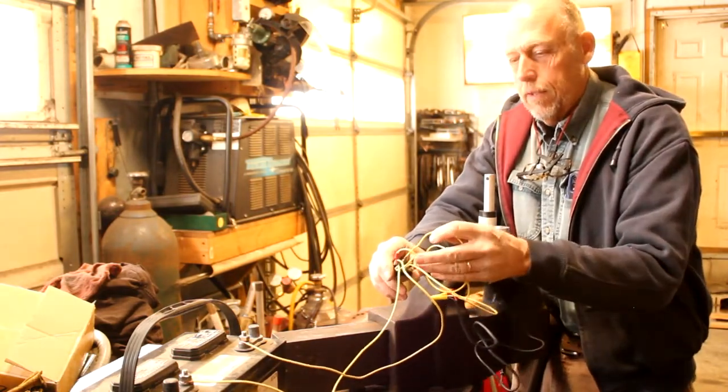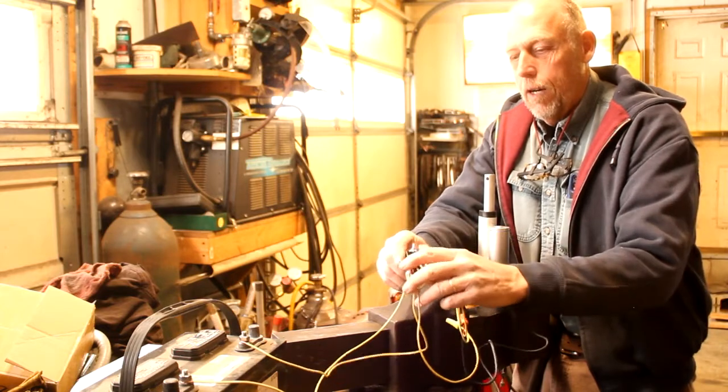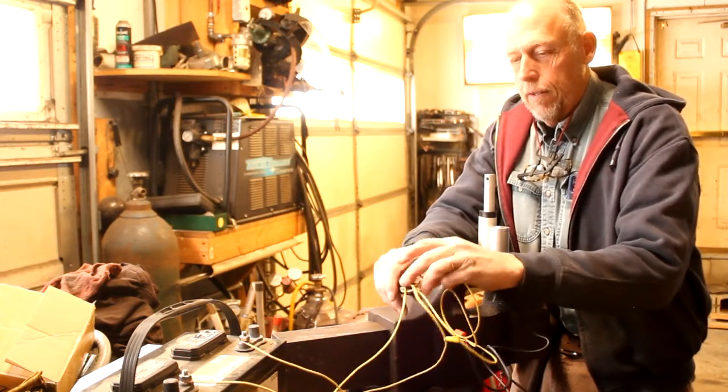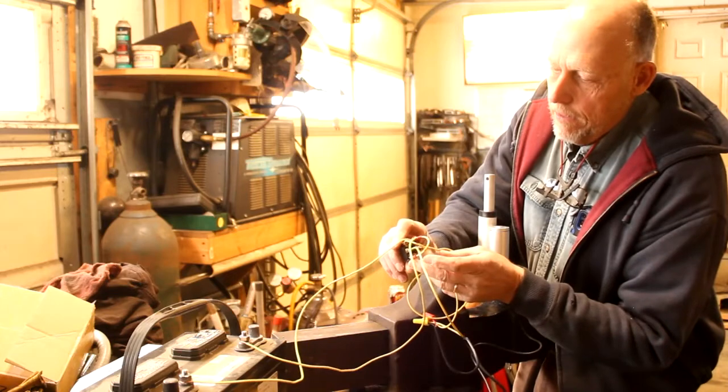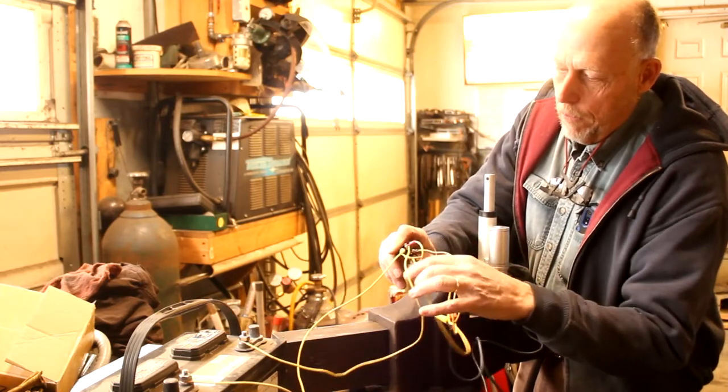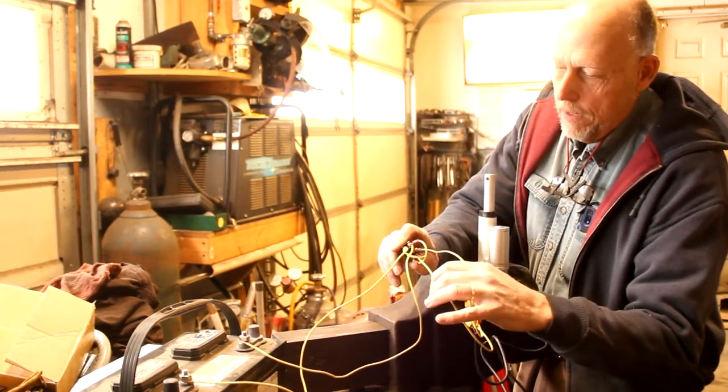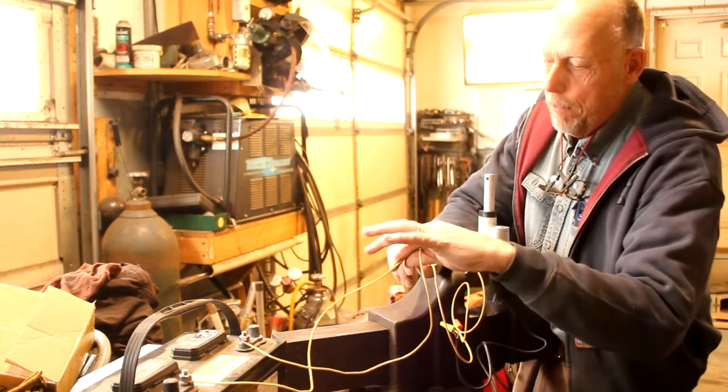And this is the double pole double throw on-off-on. And you can see the power to the motor goes out in the center. The power from the battery comes in on the edge and they simply cross over.